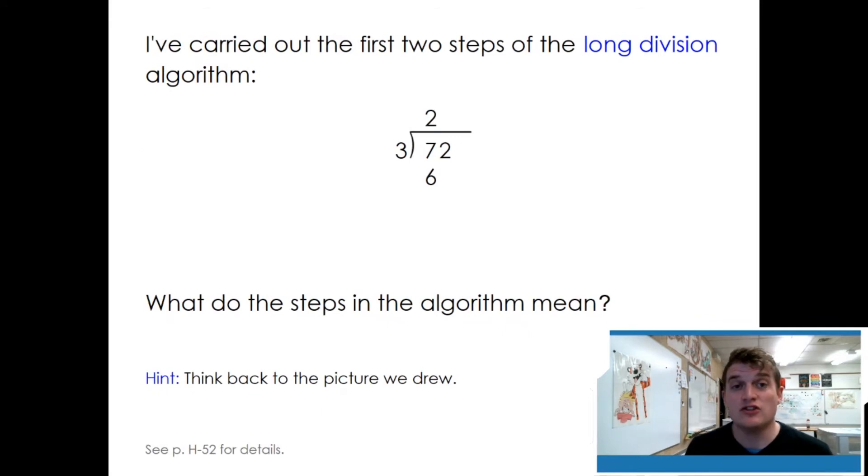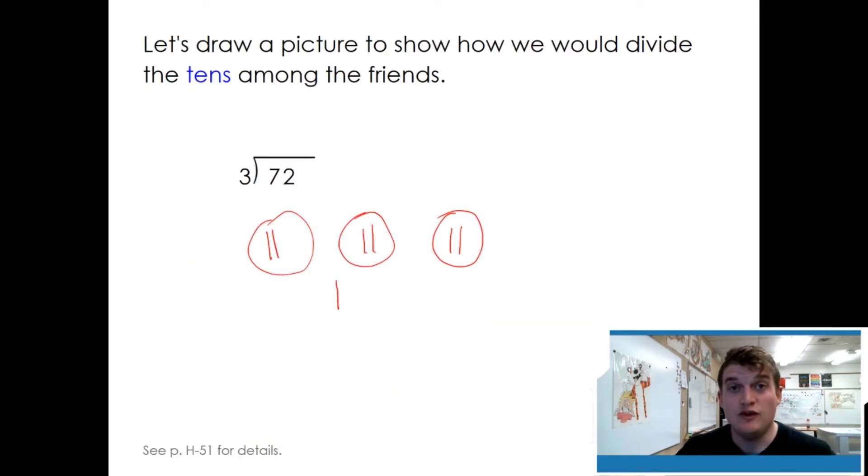I've carried out the first two steps of the long division algorithm. What do the steps in the algorithm mean? Think back to the picture we drew. So I've added a six and I've added a two. Well, where did the two come from? If we look at our picture, we see that there are two tens in each group.